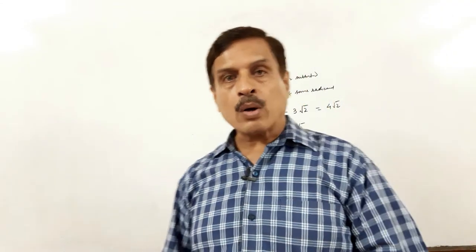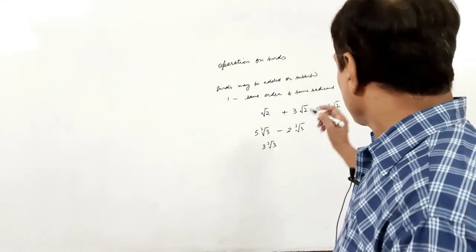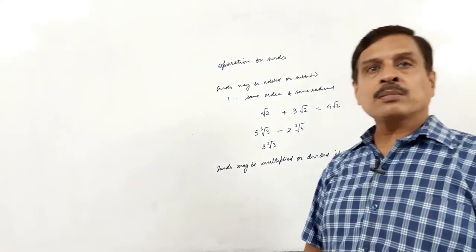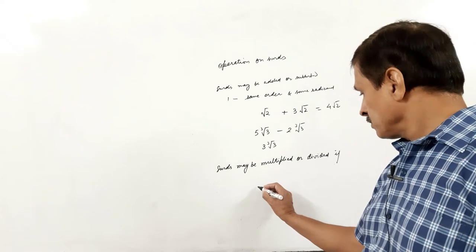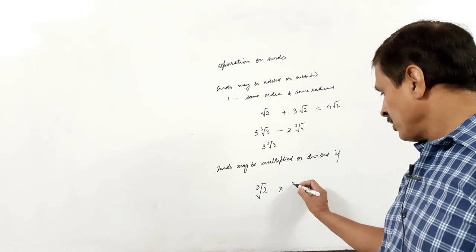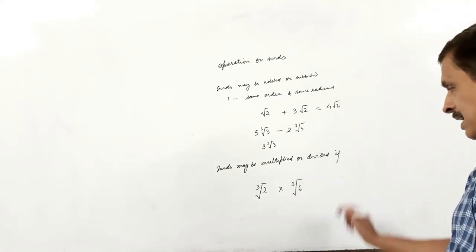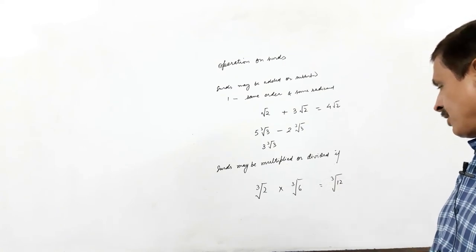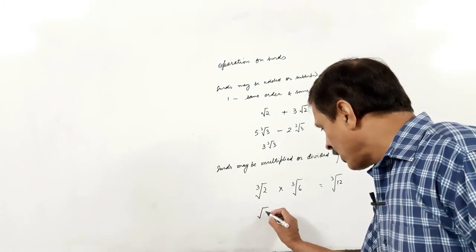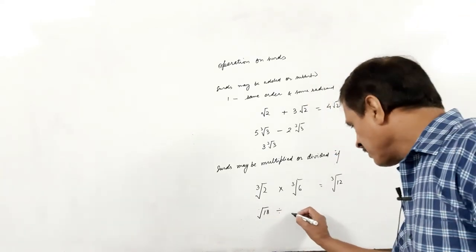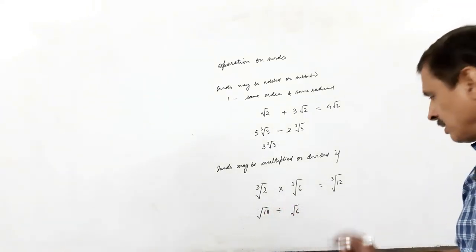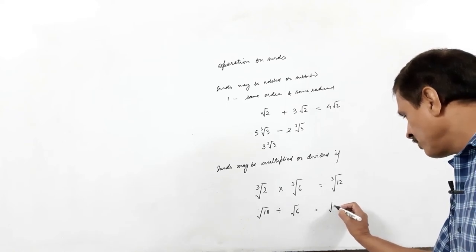In order to multiply or divide surds, they must have the same order. For example, cube root of 2 multiplied by cube root of 6 — the result is cube root of 12. Also, square root of 18 divided by square root of 6 — both have the same order, therefore the result is square root of (18/6), which is square root of 3.